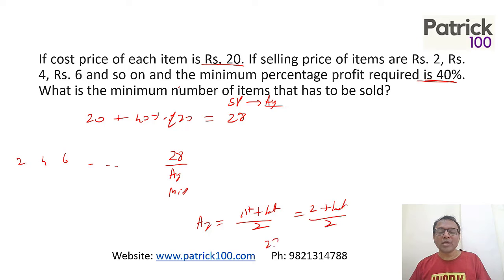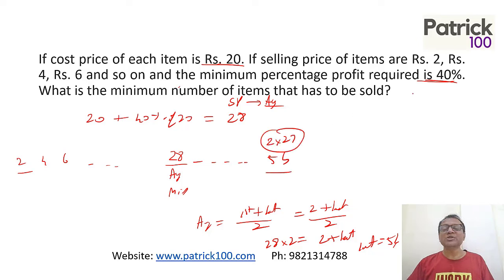So we solve it: 28 into 2 equals 2 plus last term. So the last term will become 54. This goes up to 54 - all multiples of 2 up to 54. The last term is 2 into 27, which means there will be 27 terms.